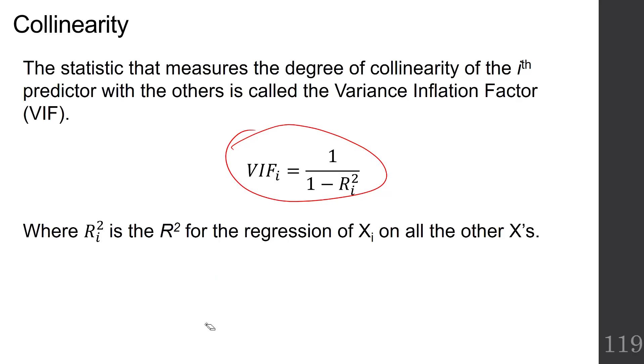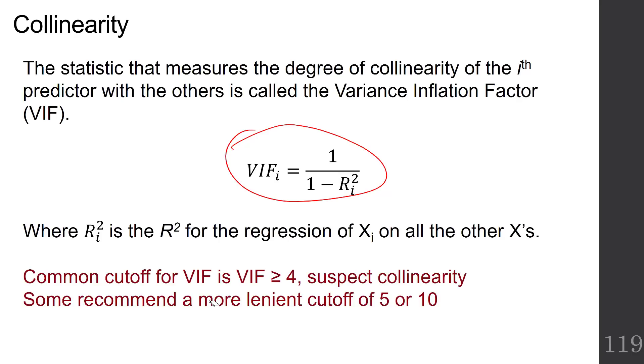We're going to kind of start at 4. The common cutoff for VIF is greater than or equal to 4. You should suspect collinearity. But some recommend a more lenient cutoff of 5 or 10 when that r squared grows to be 80 or 90%.